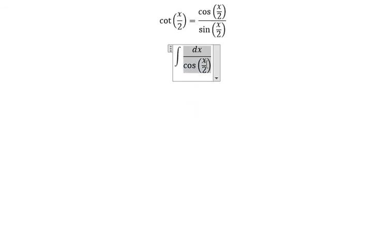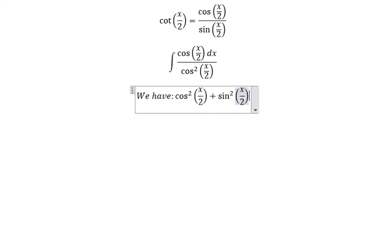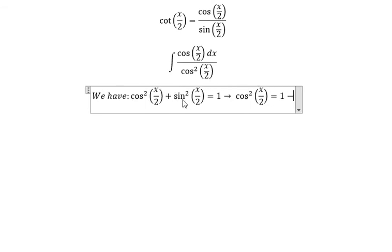Now we multiply both sides with cos(s/2) on numerator and denominator. Next we have cos²(s/2) plus sin²(s/2) equal to 1. So we change this one equal to 1 minus sin²(s/2).